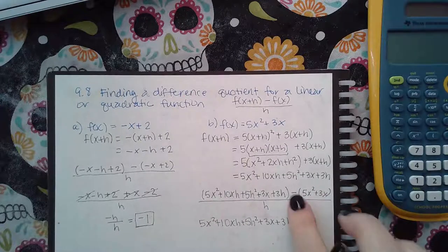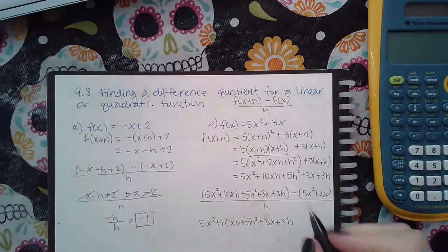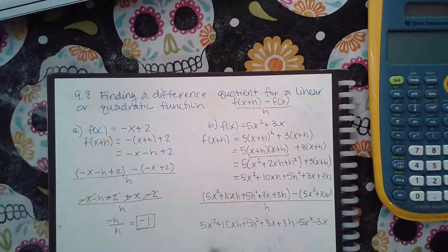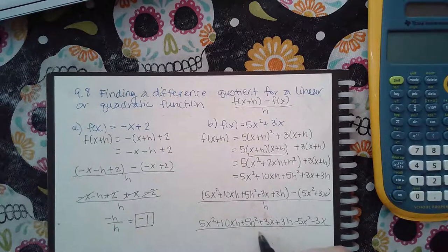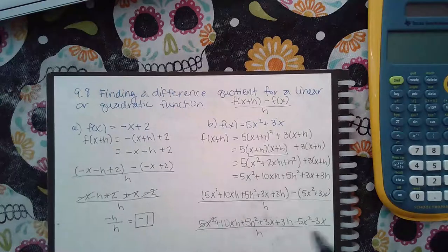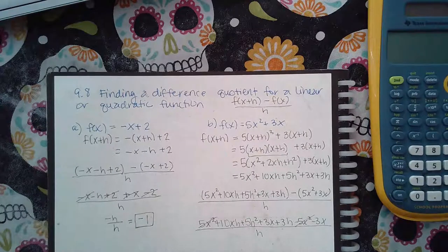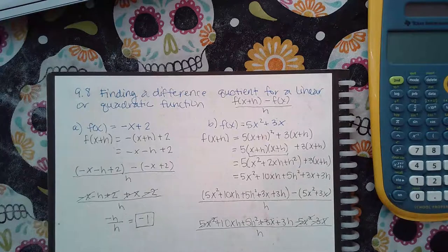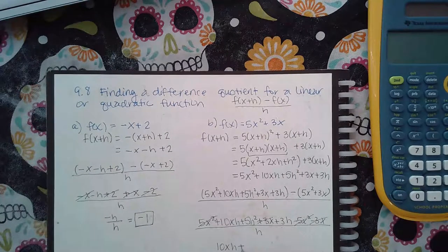And then here I do have to distribute the negative. So I get negative 5x squared and negative 3x still over h. And then the 5x squared positive and minus 5x squared will cancel. The positive 3x and negative 3x will cancel. And I'm left with this expression.